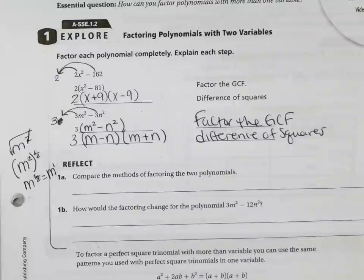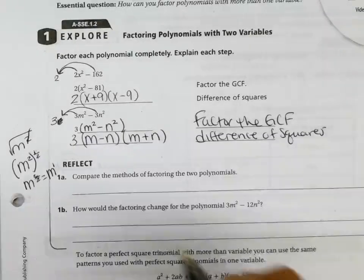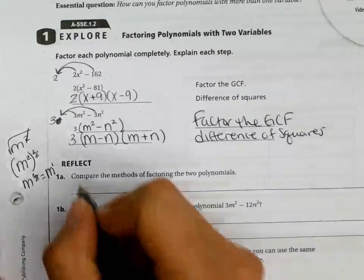So compare the methods of factoring the two polynomials. What did you guys do? They're both the same, right? The question kind of is like a little bit tricky the way that they write it. I don't really care for the way they wrote this question. But the methods are the same, except the second polynomial has two variables.